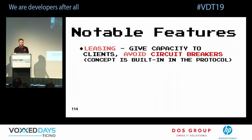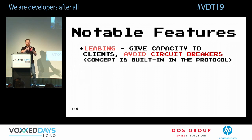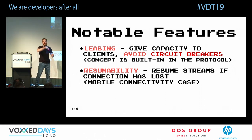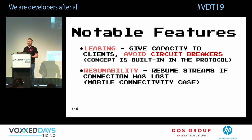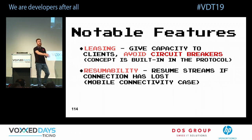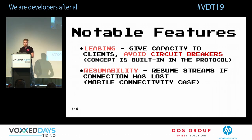Other notable features: leasing — basically a circuit breaker built into the network protocol, so you don't have to implement service availability logic yourself. Resumability — for mobile phones that disconnect and reconnect, instead of implementing resumption logic yourself, this is built into the protocol. Just enable the feature with an additional flag in your library.